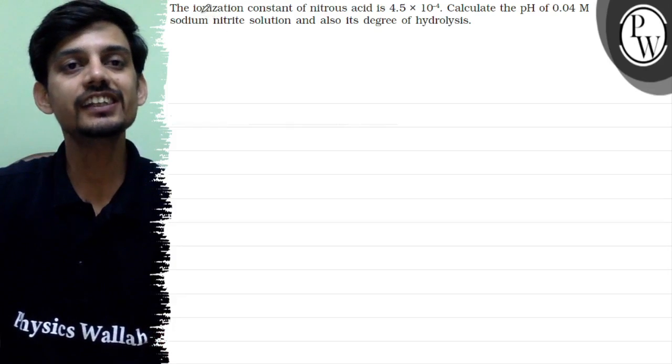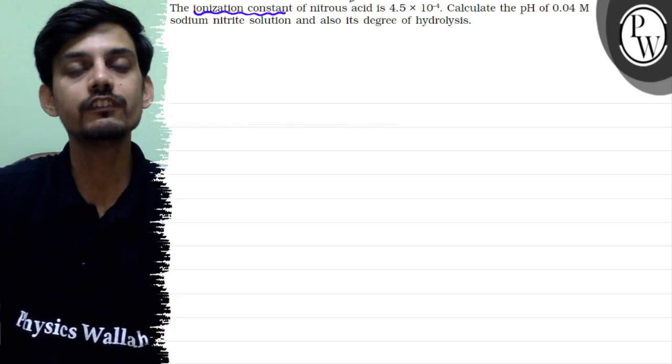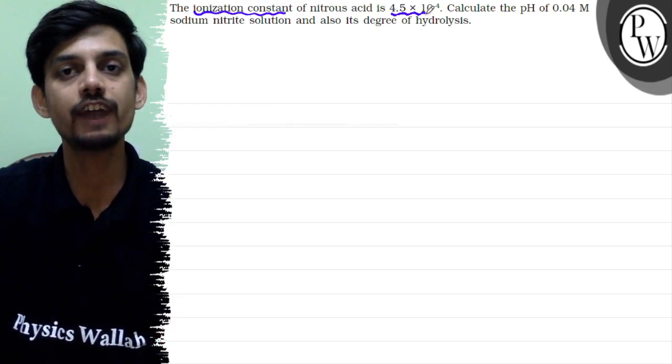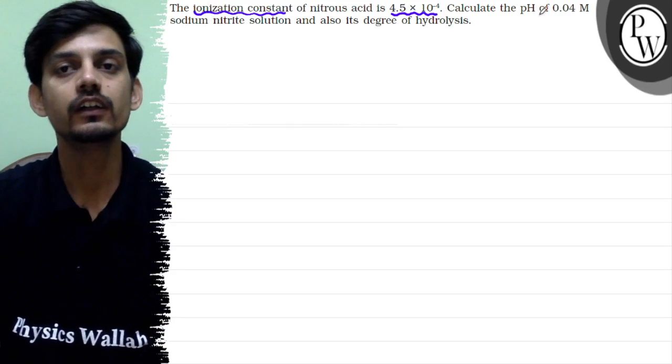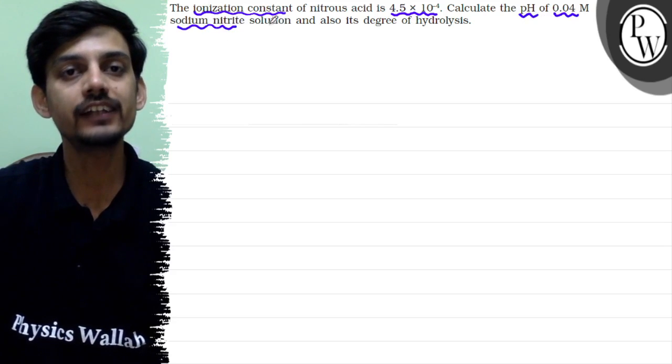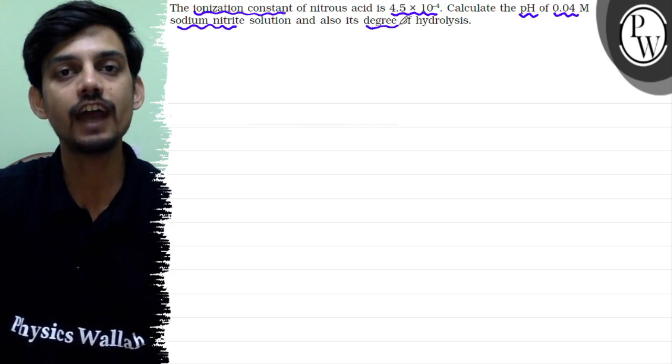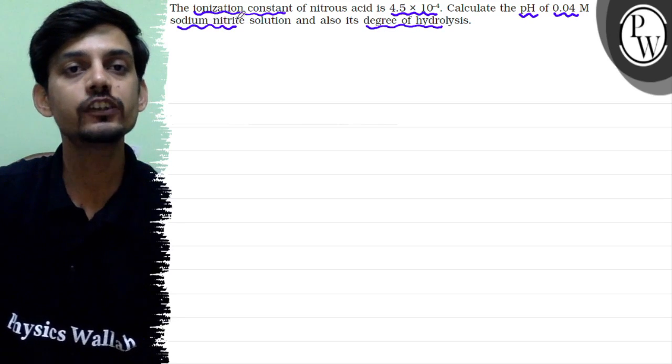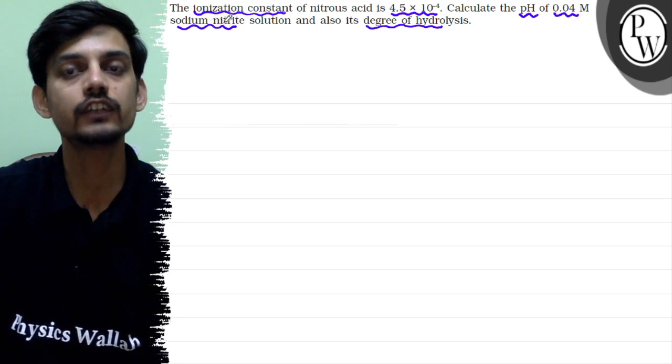Hello, the question says the ionization constant of nitrous acid is 4.5 × 10^-4. Calculate the pH of 0.04 molar sodium nitrite solution and also its degree of hydrolysis. So here we have salt sodium nitrite solution's pH we have to find.